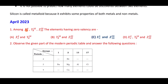Among three elements with atomic numbers 4, 2, 8, and 10, the elements having zero valence electrons are X and Z because their outermost shells are completely filled.